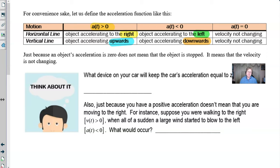Now if acceleration is equal to zero, that means that the velocity is not changing. Be careful: just because an object's acceleration is zero doesn't mean that the object is stopped. It just means that the velocity is not changing. It's basically traveling at a constant rate, a constant speed. The velocity is not changing - it's got velocity, but it's not going up or going down. What do you guys think about this one? What device on your car will keep the car's acceleration equal to zero? It is called the cruise control.